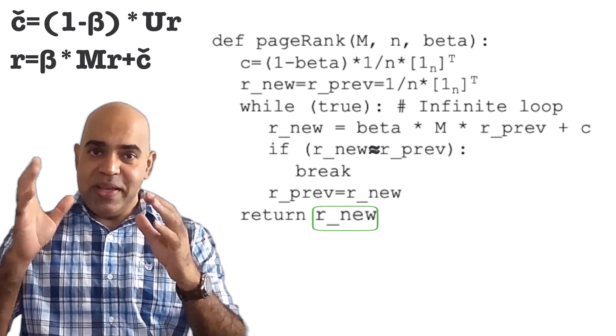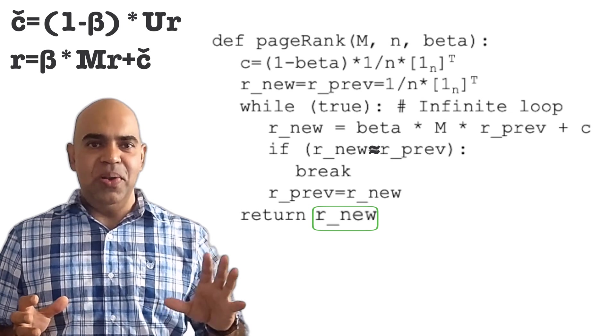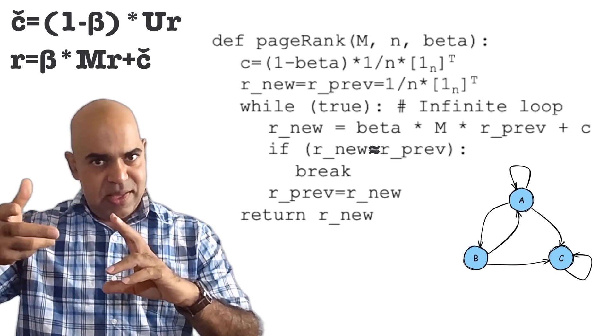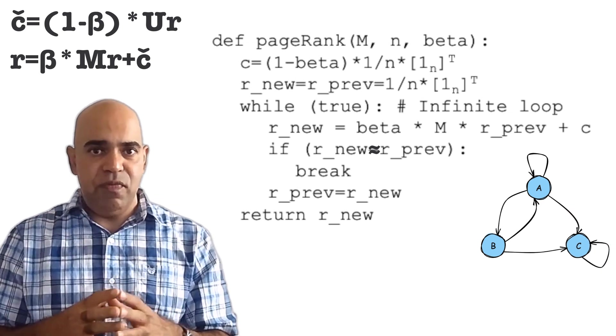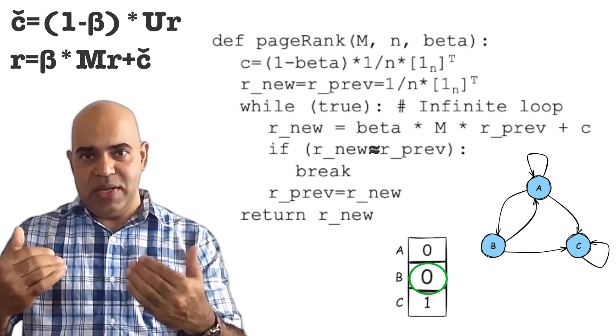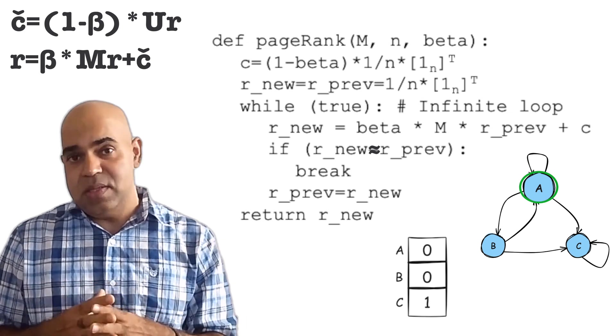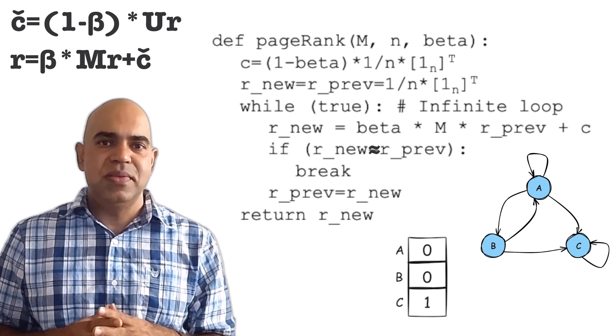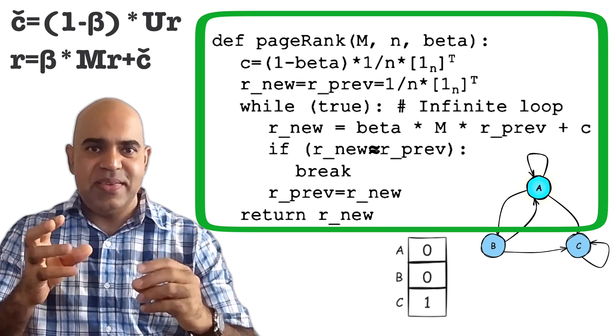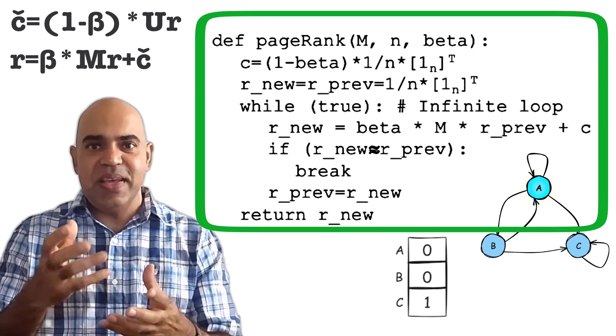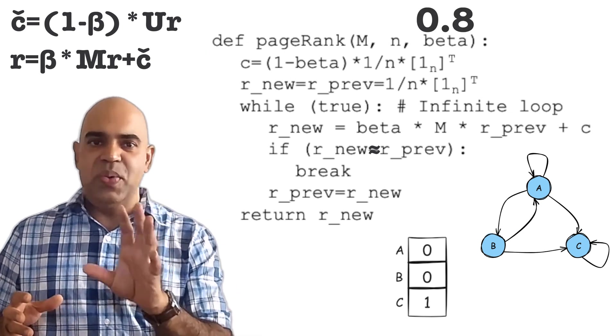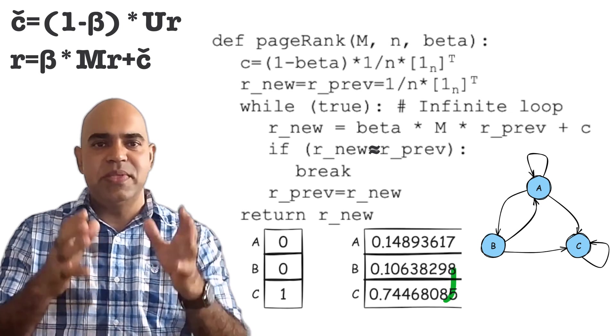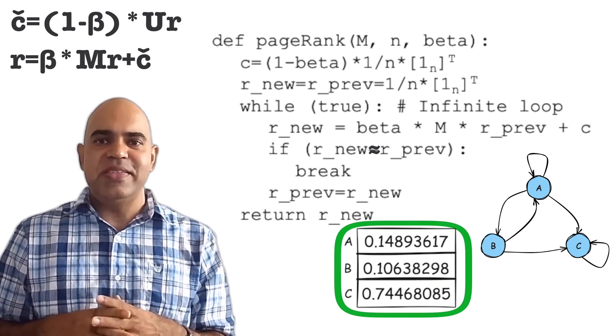R new will reflect the page rank probabilities of all websites. For this internet network, since it has a spider trap, we know that the page rank vector would be 0, 0, 1 for these three websites without teleportation after many, many iterations. With this updated pseudocode that includes teleportation with beta equal to 0.8, we will see that the rank vector becomes this after the algorithm converges.